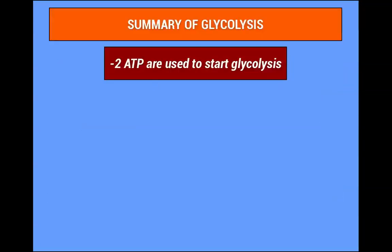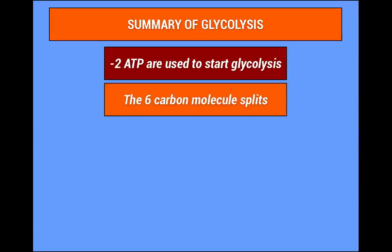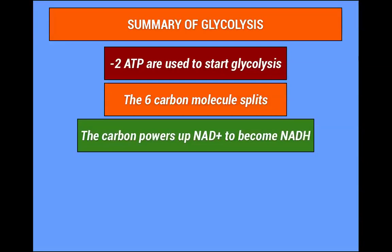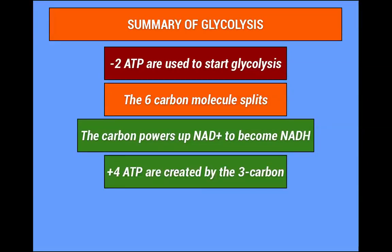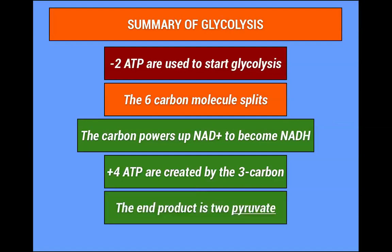If you want a short summary of glycolysis, two ATPs are used to start glycolysis. The six-carbon molecule splits. The carbons power up NAD plus to become NADH. Four ATPs are then created by the three-carbon molecule, and the end product is two pyruvates.